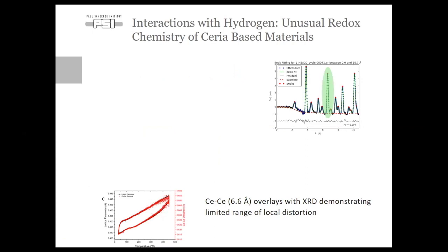So, what do we get? If we look at one of the further distances within the ceria fluorite structure, so cerium-cerium scattering at 6.6 angstrom, and we overlay this with our XRD refinement, we find that in the medium range and long range, the structure agrees in how it expands. There is no significant deviation between the two methods.